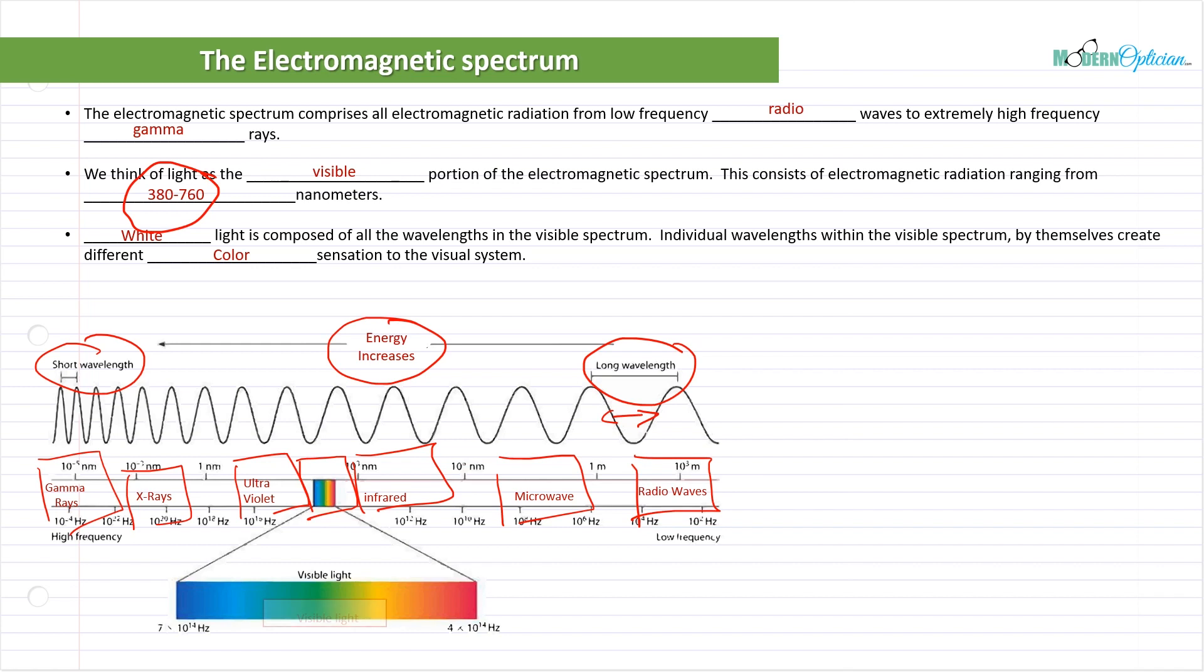and it also has an impact on how it affects us. Again, remember that this portion here, visible light, falls between 380 and 760, but within that,